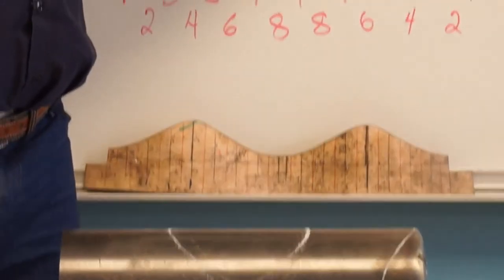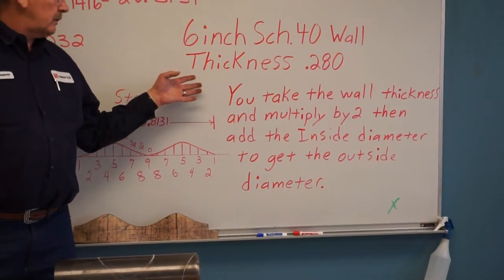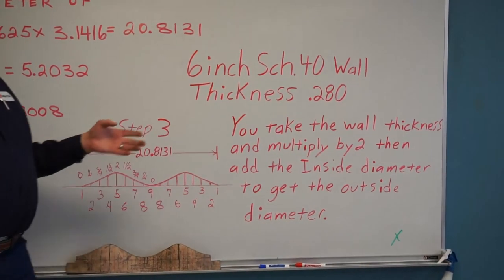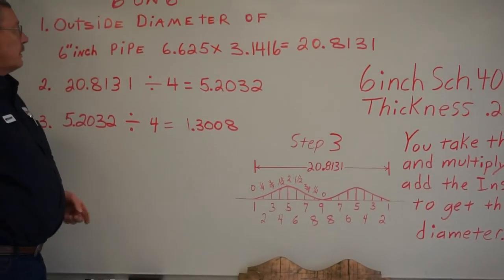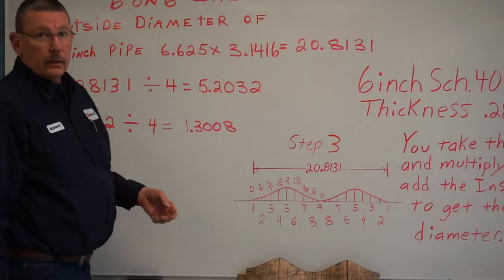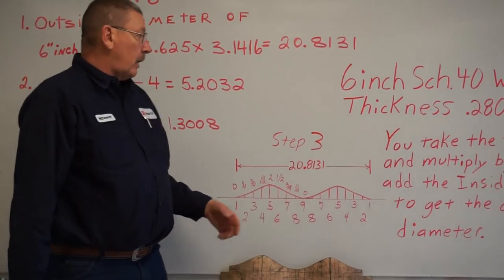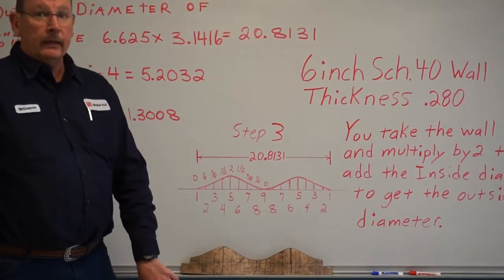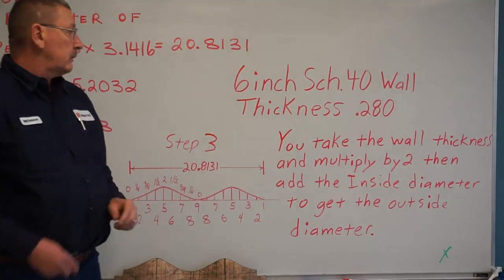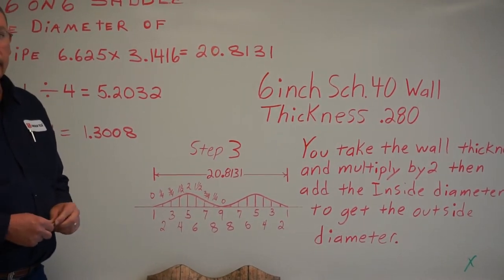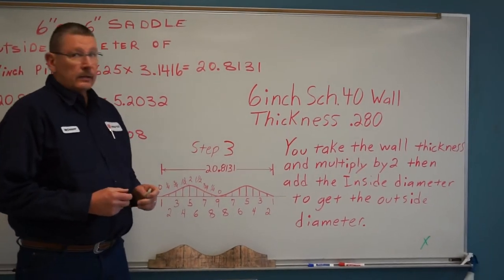As you can see on the board, some students sometimes wonder how you can get to all these measurements from step two. Why is the pipe six and five-eighths OD? Where does that come from? How do you get that? So we all know that pipe is based on the ID dimension. So six inch schedule 40 wall thickness is two-eighths, so a little bit more than a quarter inch, a little bit less than five-sixteenths.